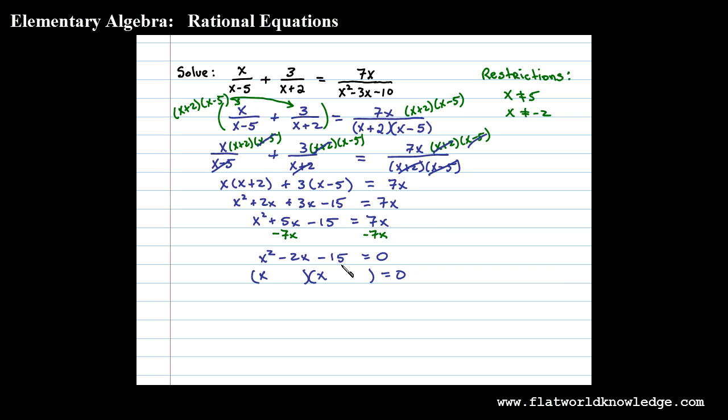x squared factors as x times x. The factors of 15 that add up to negative 2 are 3 and 5. We'll get a negative 2x if the 5 is negative and the 3 is positive. Set each factor equal to 0 and solve. In this case x equals negative 3 or x could equal 5.